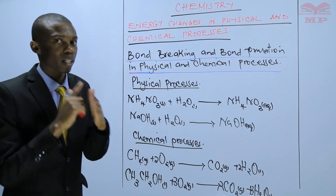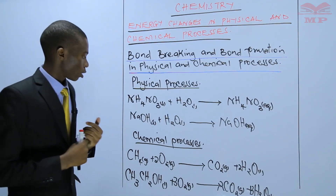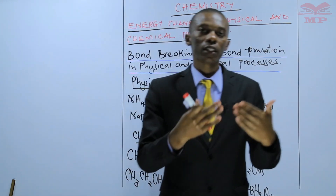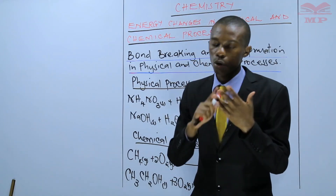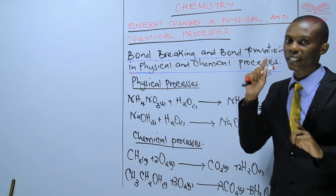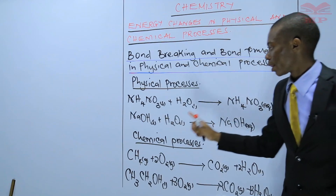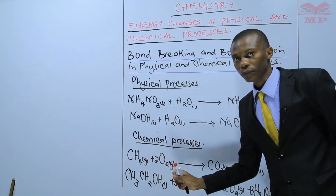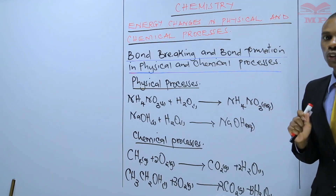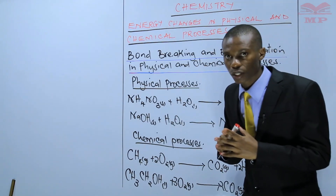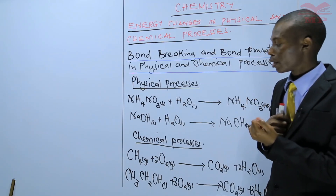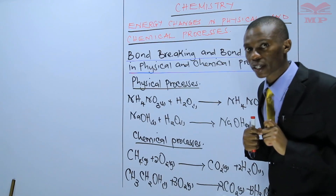So make sure you know the difference between a chemical process and a physical process. In bond breaking, you require heat so that bonds are broken. For you to be able to break the covalent bonds in methane, you need to apply heat. So bond breaking is an endothermic process — it is a reaction which requires heat.